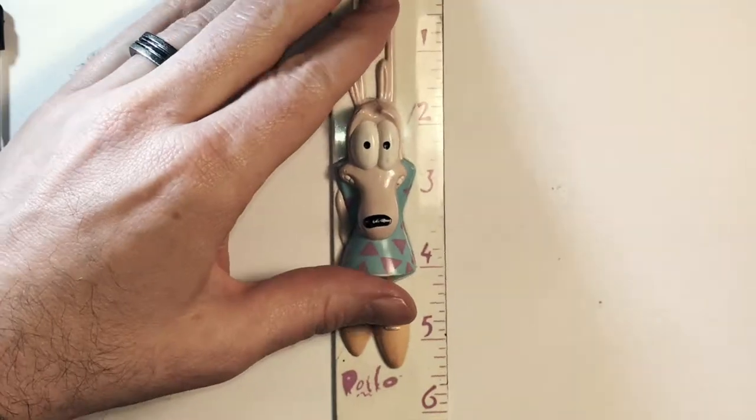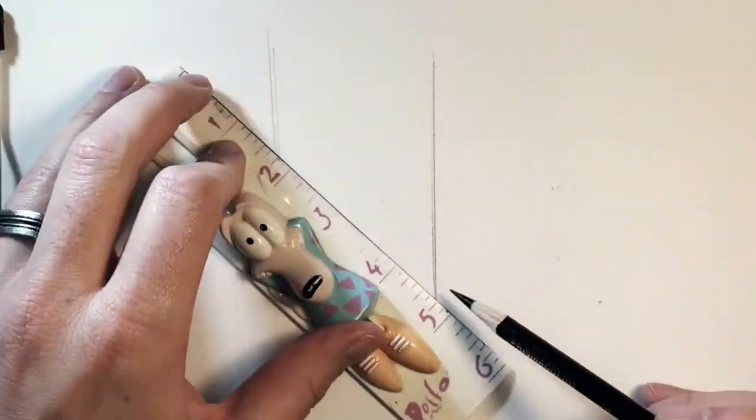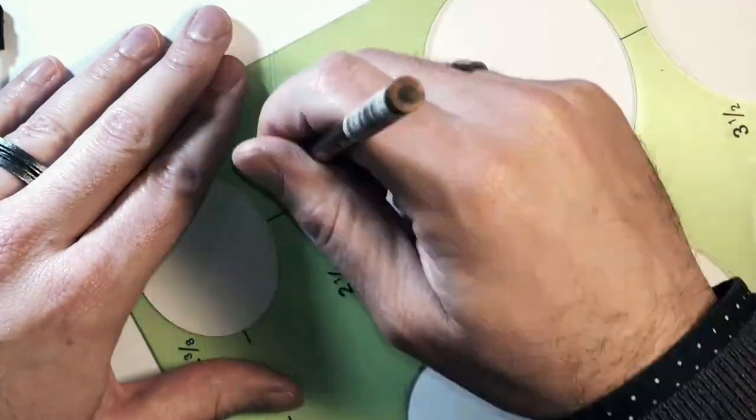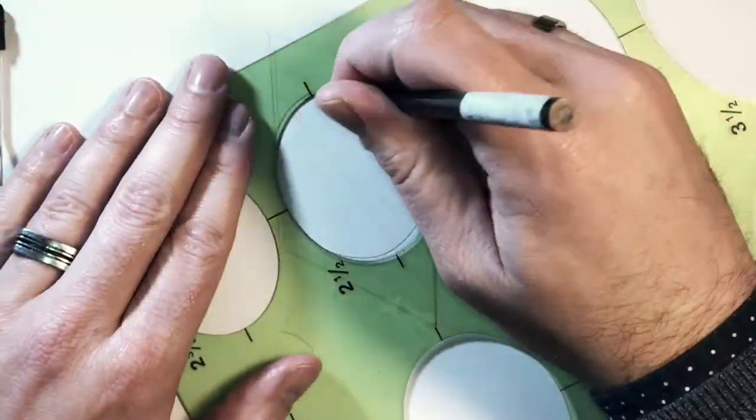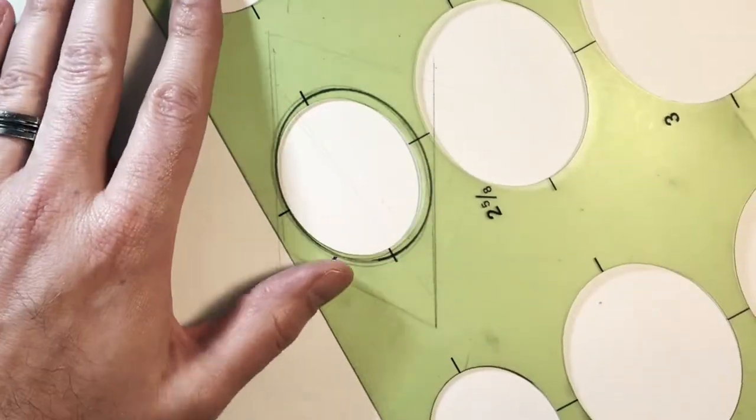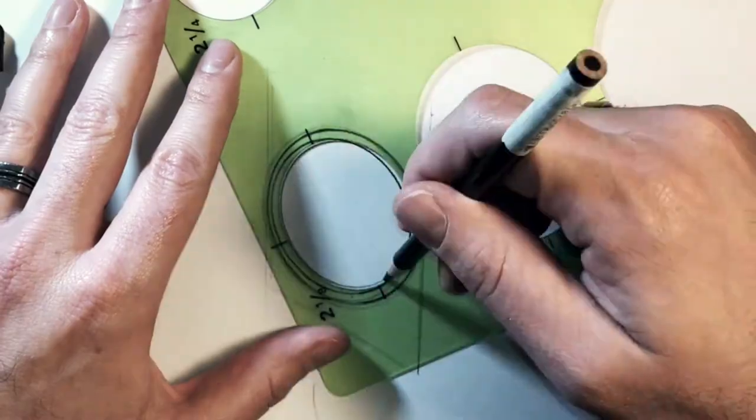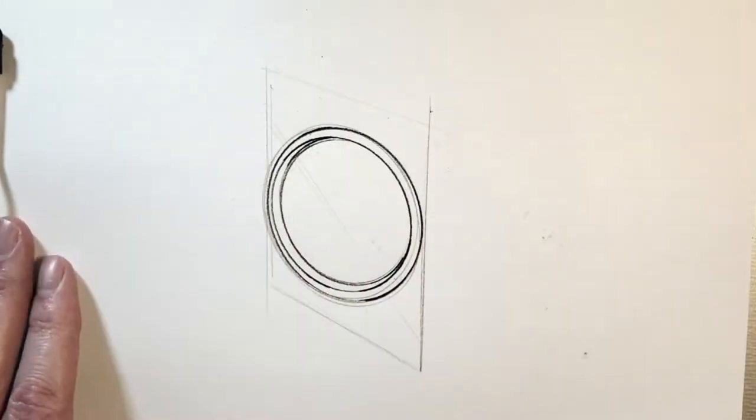I'm gonna start by sketching some verticals that imply the front face of this washing machine and getting a nice diagonal across there that'll serve as the center point for my ellipse. Now notice I've got an ellipse guide, but as I use the ellipse guide, I'm moving it around a little bit so that the sketch stays loose, the lines aren't too tight, it's not too neat.